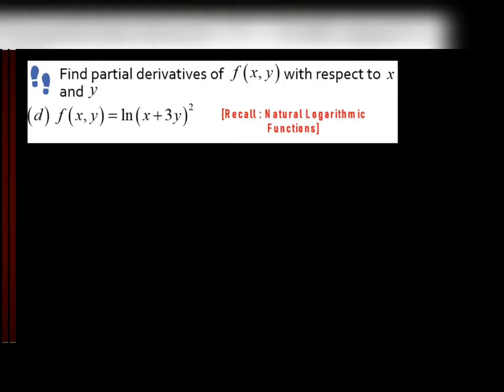This is the type of natural logarithmic function. To differentiate natural logarithmic function ln, what we have to do is we have to take 1 over. But before that, we can bring the power as the coefficient to make it easier to differentiate.